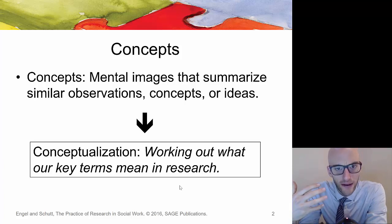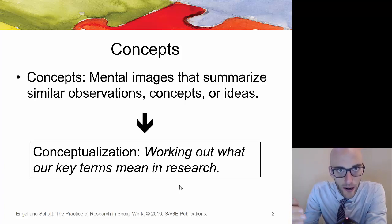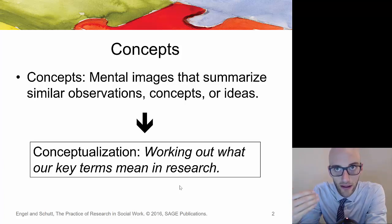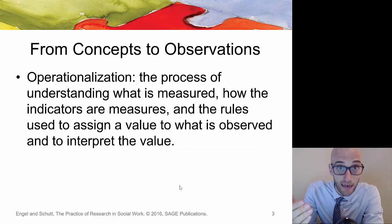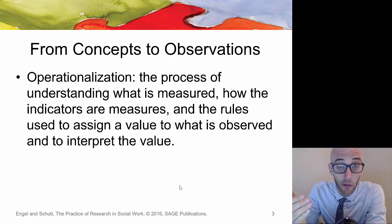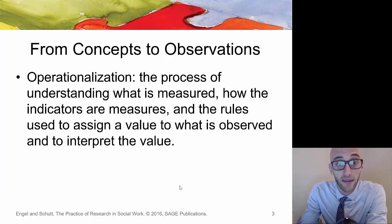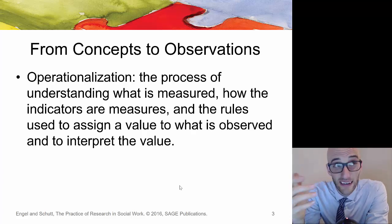Within the realm of mental health, if you're looking for a conceptual definition of, say, an anxiety disorder, we kind of know what anxiety is, but to really conceptualize anxiety disorder we could go to the DSM. Once we have a conceptual definition we can move into an operational definition — defining exactly what we're trying to measure in quantifiable terms. Operationalization is the process of understanding what is measured, how indicators are measured, the rules used to assign a value to what is observed, and how to interpret that value.